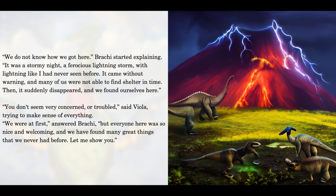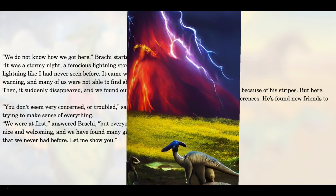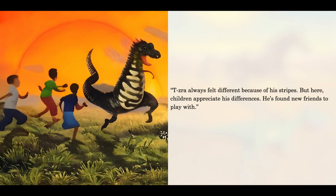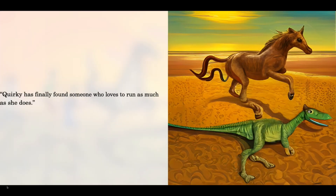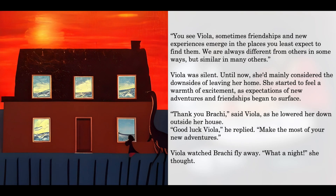"You don't seem very concerned or troubled," said Viola, trying to make sense of everything. "We were at first," answered Brachy. "But everyone here was so nice and welcoming, and we have found many great things that we never had before. Let me show you. Tezra always felt different because of his stripes. But here, children appreciate his differences. He's found new friends to play with. Quirky has finally found someone who loves to run as much as she does. You see, Viola, sometimes friendships and new experiences emerge in the places you least expect to find them. We are always different from others in some ways, but similar in many others."